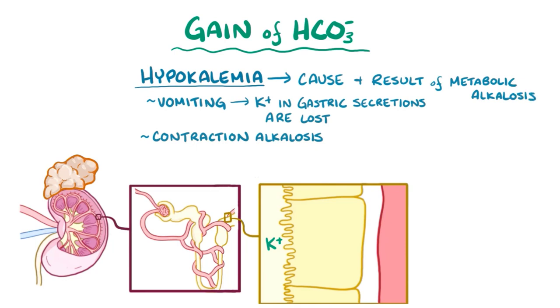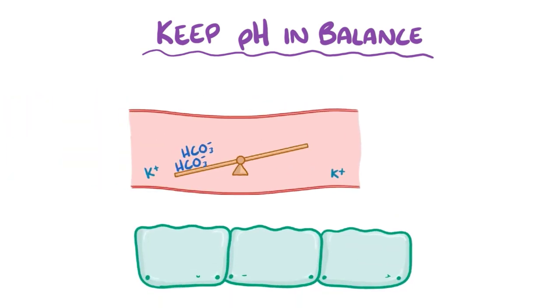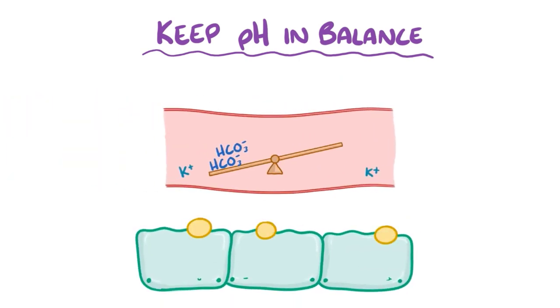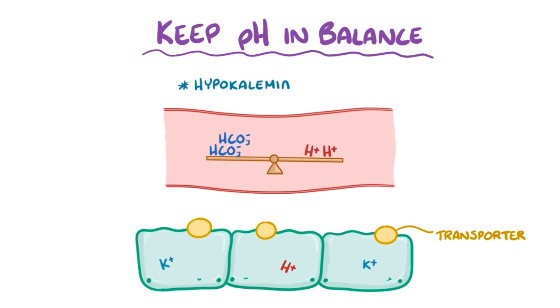If there's an increase in the bicarbonate concentration in the blood, the body has a few important mechanisms to help keep the pH in balance. First, cells throughout the body have a special type of ion transporter that exchanges hydrogen ions for potassium ions across the cell membrane. Using this transporter, the cells can shift hydrogen ions out of the cells and into the blood, and in exchange pull potassium ions out of the blood and into the cells. This can contribute to the hypokalemia.